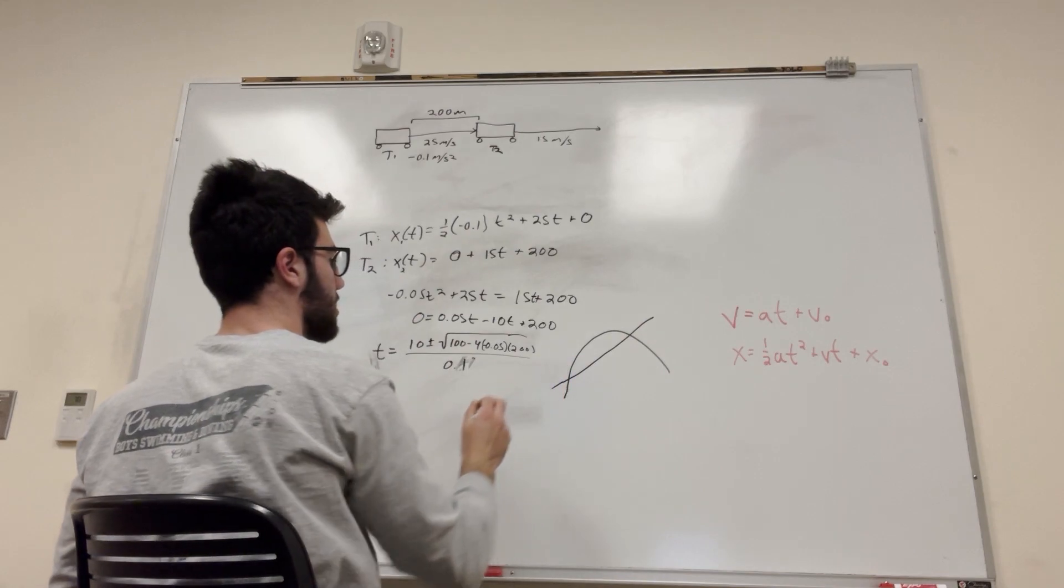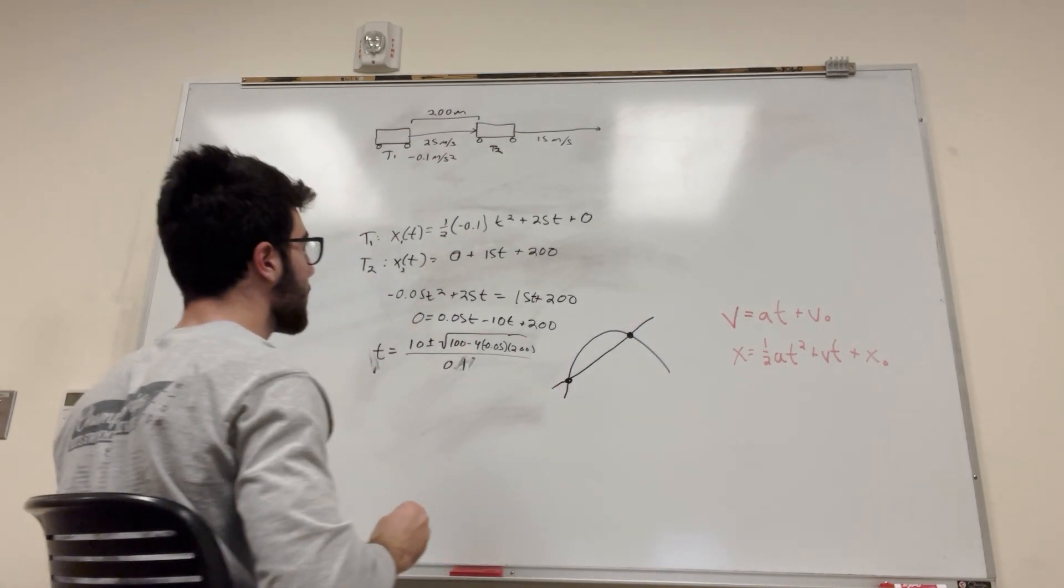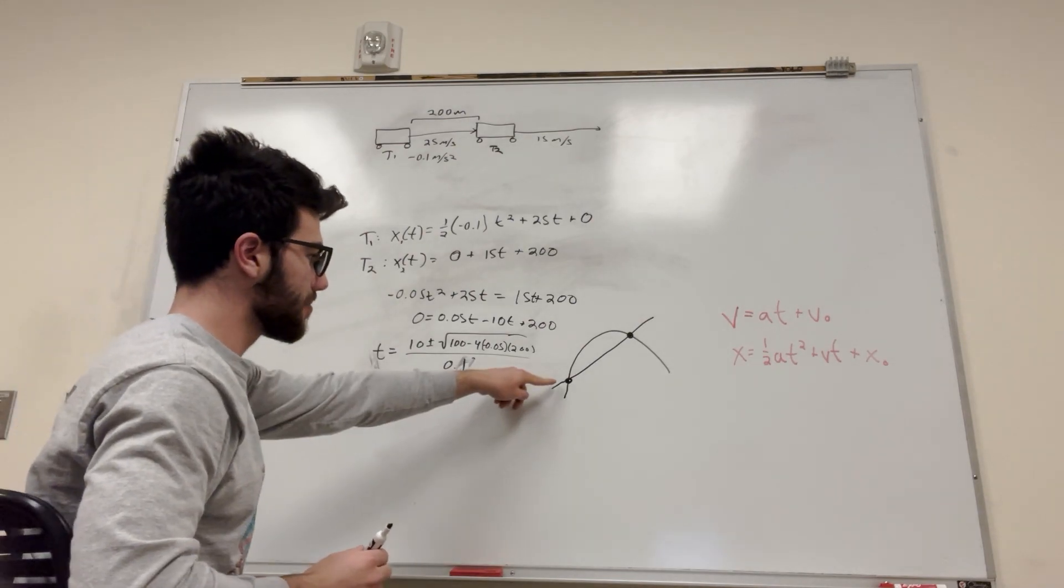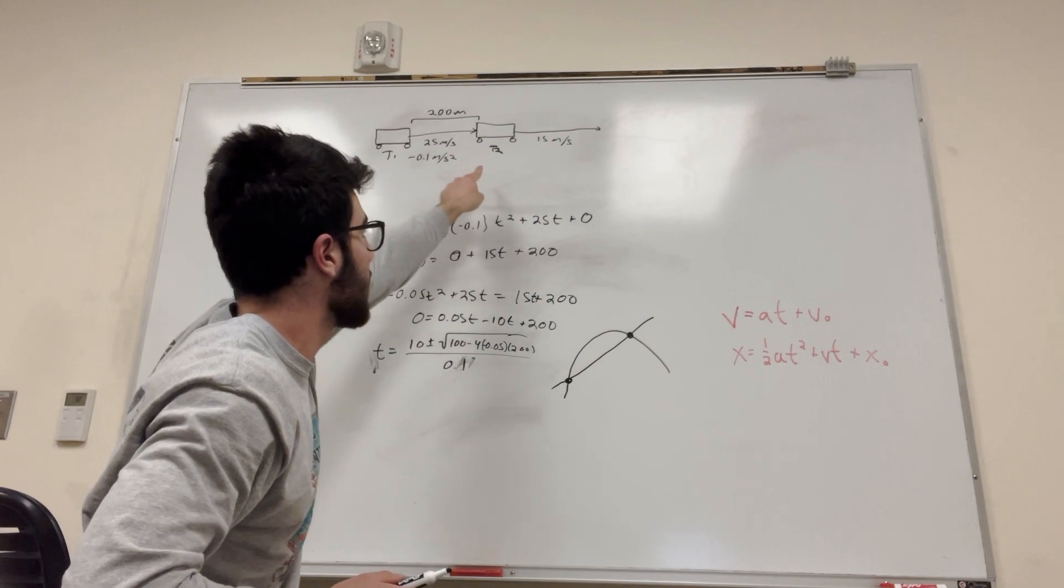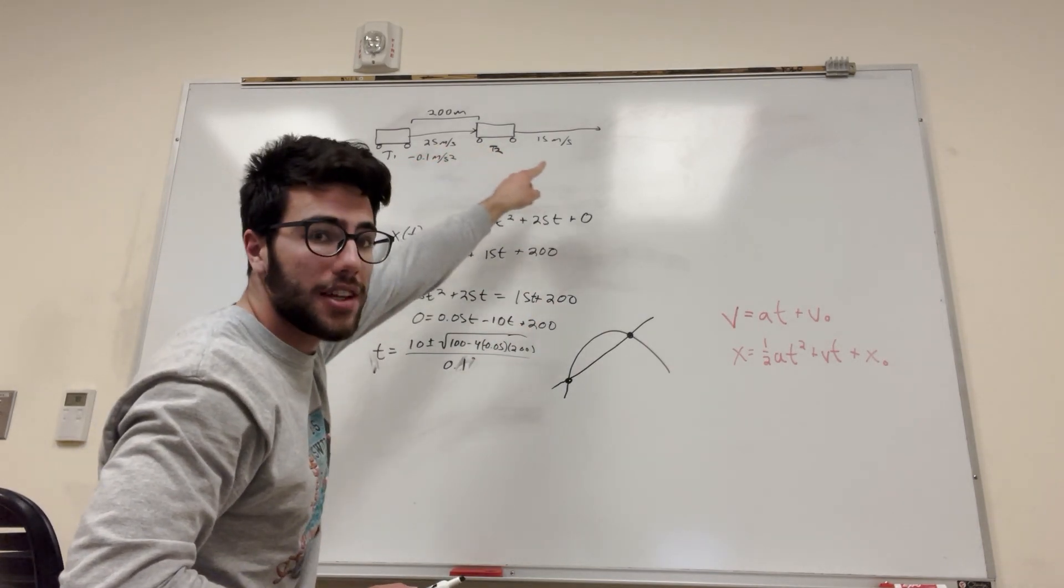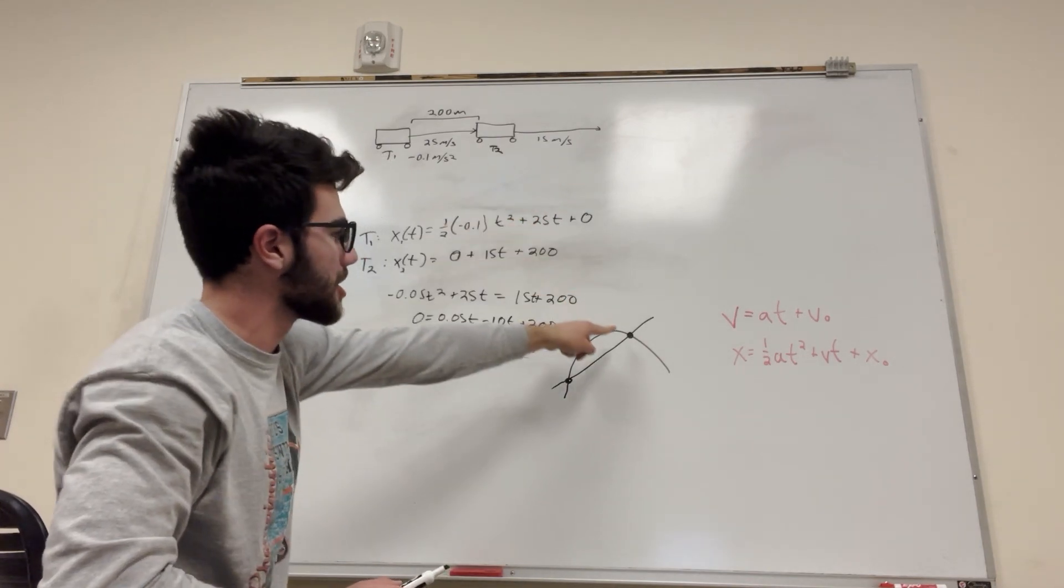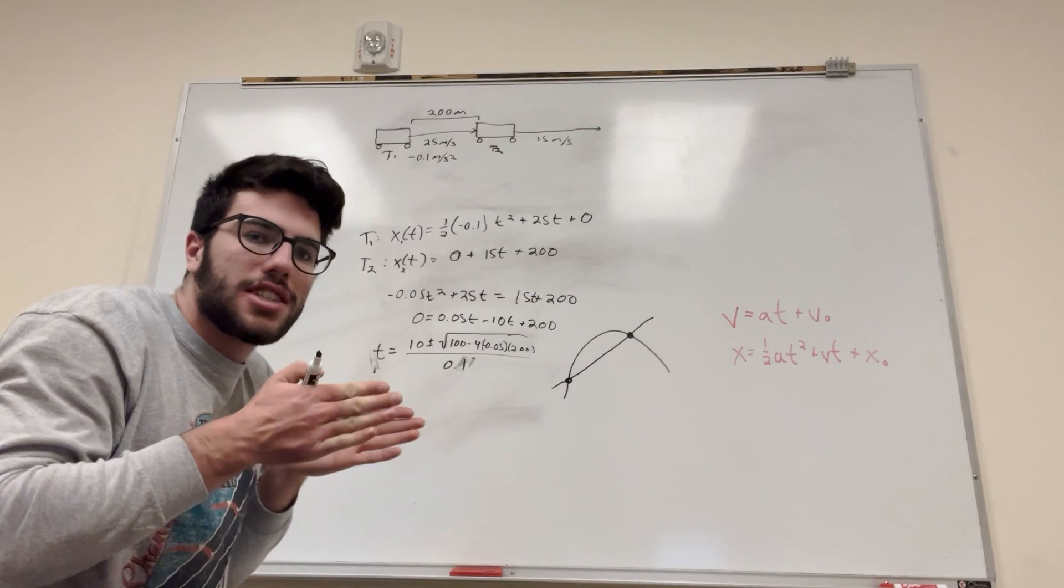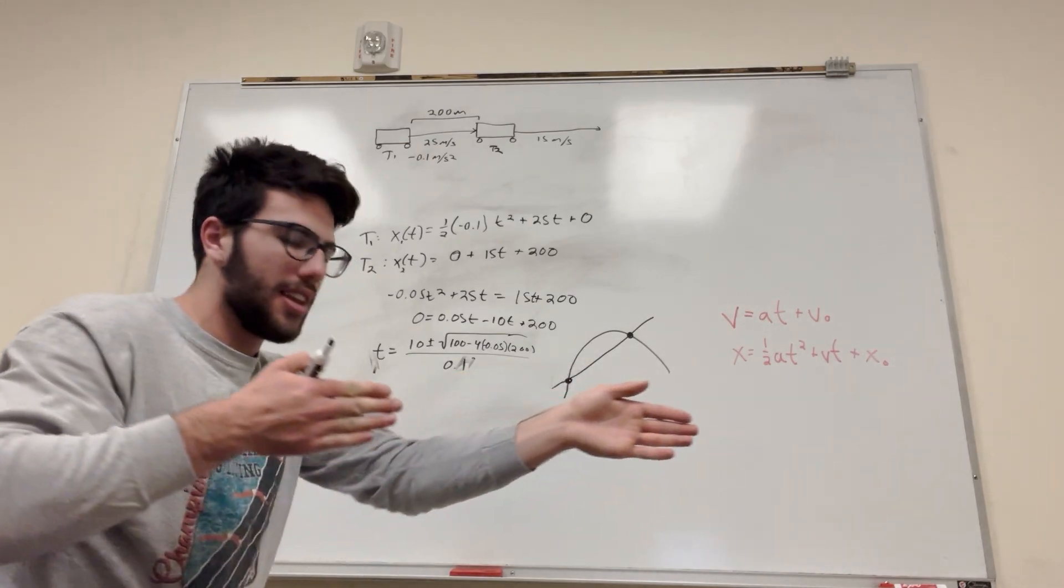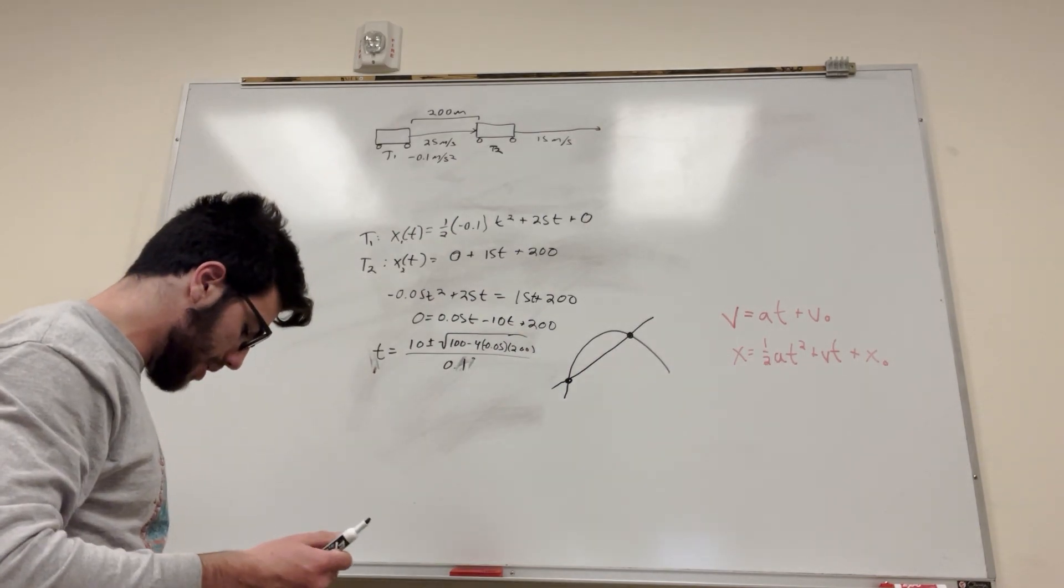And what the two values you're going to get are this first value, and the second value. What this first value represents is the first point where this train passes this train, it's going to touch at that point, and then it's going to be ahead of this train, but it's going to start slowing down. And then this train is going to catch up, which is where this intersection happens. So if they never ran into each other, say they were on separate trains passing, it would pass, and then it would come back around, basically. So let's see what our two T values are.